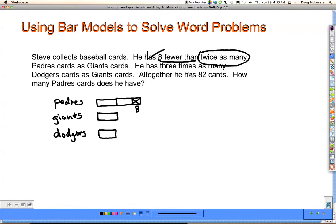He has three times as many Dodgers cards as Giants cards. Alright. Three times as many Dodgers as Giants. Three times as many. Good. So I can check that off.